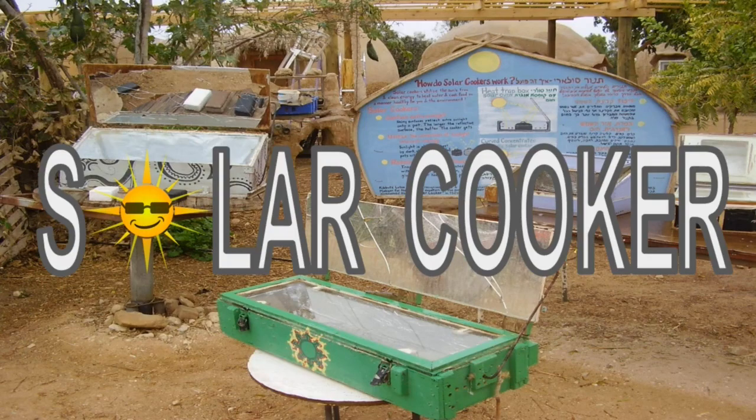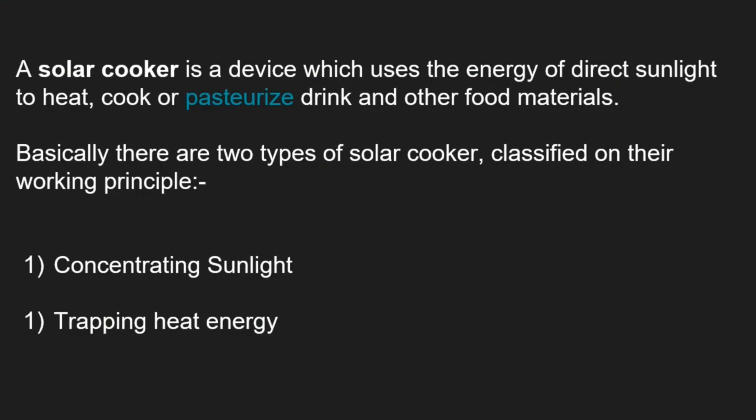A solar cooker is a device which uses the energy of direct sunlight to heat, cook, or pasteurize drinks and other food materials. There are two types of solar cookers, classified on the basis of their working principle: number one, concentrating sunlight, and number two, trapping of heat energy.